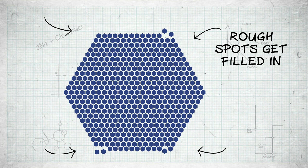So over time, the rough spots get filled in, leaving only the straight, smooth edges. These are the facets, and it's these facets that reflect the light and make snow look white.